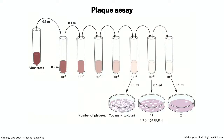The cells are growing on the plastic; you put agar on top of them. The function of the agar is very important — it restricts virus diffusion in the medium. If you put liquid on top, when virus came out of cells it would spread to all the cells in the monolayer and infect them all, and you would never get a plaque. The agar's function is to restrict virus diffusion so you can get a plaque.